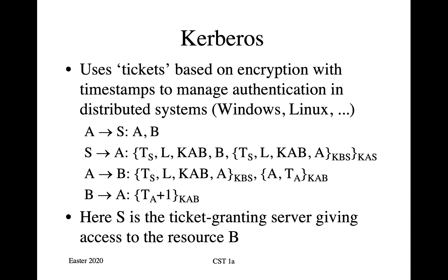The system that is widely used was developed in the late 70s and early 80s to authenticate Unix machines on a LAN and is now used in Windows and other systems. It is called Kerberos — Kerberos was the three-headed dog who was the guardian of the underworld. It works more or less as described on the previous slide but with the addition of timestamps.